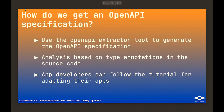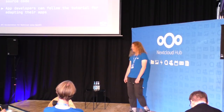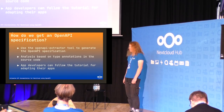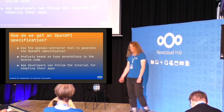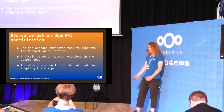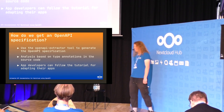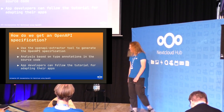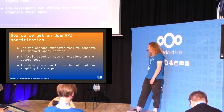So how do we get an OpenAPI specification in the context of Nextcloud? We built a tool called the OpenAPI extractor that generates a specification. It helps you make the necessary code changes in your app that are required to support OpenAPI. It shows you errors and warnings about things that might be wrong, and in the end you get a full specification that works.